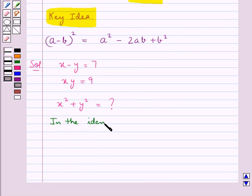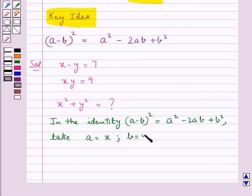Now in the identity a minus b whole square equal to a square minus 2ab plus b square, we take a as x and b as y.